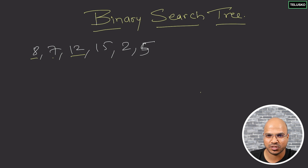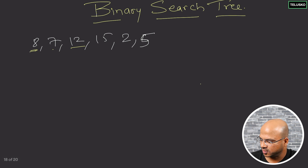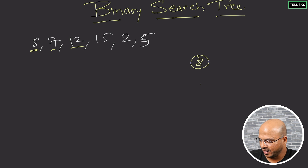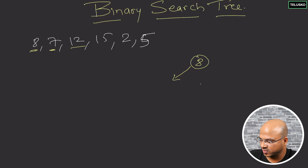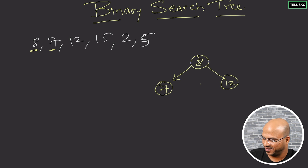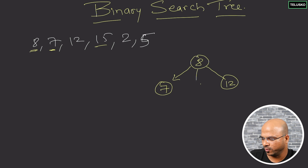Let's say we have these values. When you work with 8, it becomes your root node — you always take your first element and make it the root node. Next you have 7: since 7 is less than 8, it goes on the left-hand side. Then you have 12: since 12 is bigger than 8, it goes on the right-hand side. Both child slots for the root node are now filled. What about the next element, 15?